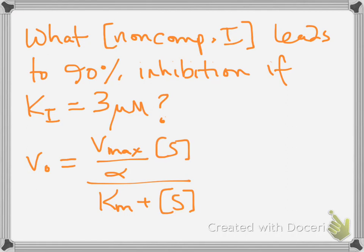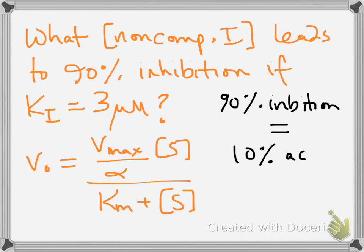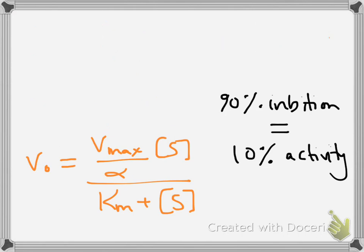I mentioned you have to make a couple of intuitive leaps in the beginning. So 90% inhibition is the same as saying 10% activity. So to make an algebraic equation that describes that...